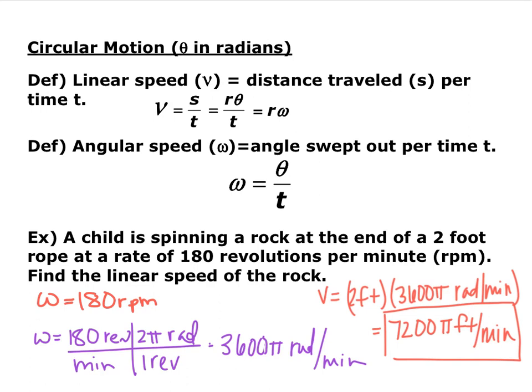Converting 180 revolutions per minute gives 3,600π radians per minute as our angular speed. Then linear speed v = r × ω = 2 feet × 3,600π radians per minute = 7,200π feet per minute. Note that radians is a non-unit — we don't need to cancel it — so the answer is simply 7,200π feet per minute. Leave it in terms of π; there's no need to plug it into a calculator.